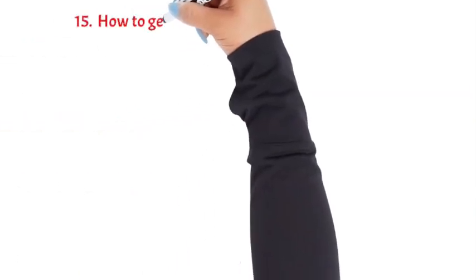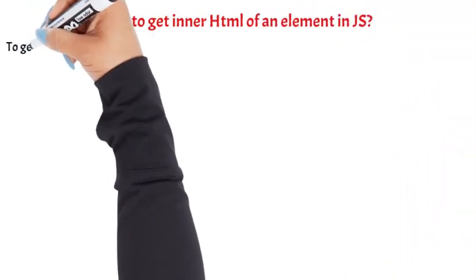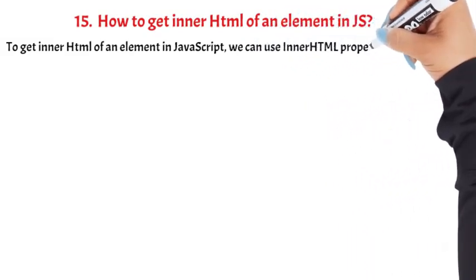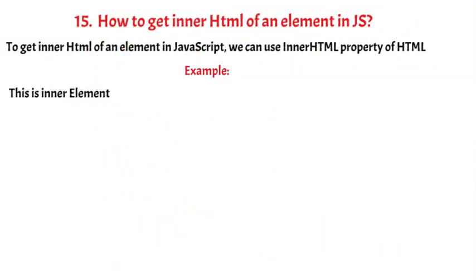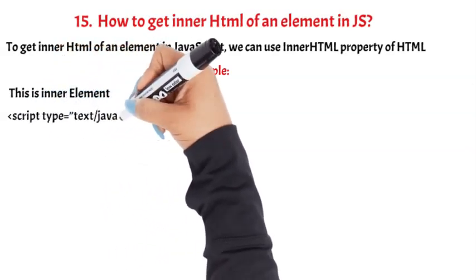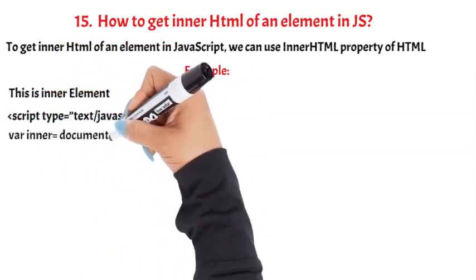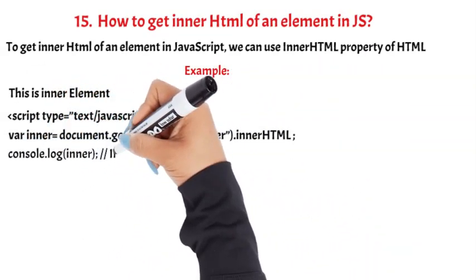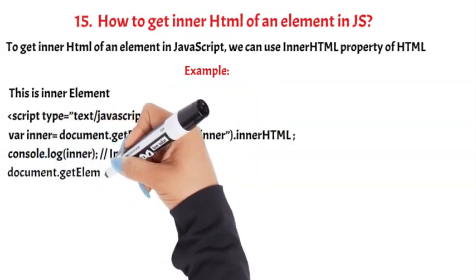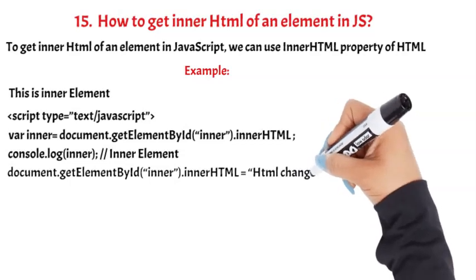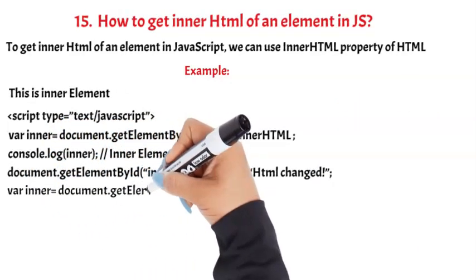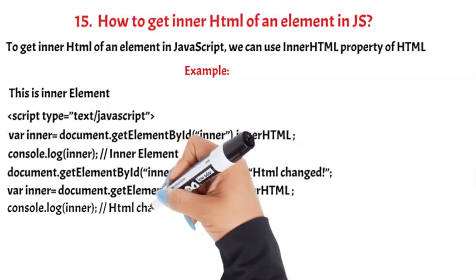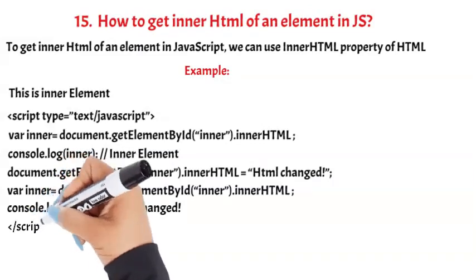Question 15: How to get inner HTML of an element in JS? To get inner HTML of an element in JavaScript, we can use innerHTML property of HTML. Example: var inner = document.getElementById('innerHTML'); console.log(inner); // inner element. document.getElementById('innerHTML').innerHTML = 'HTML changed'; var inner = document.getElementById('innerHTML'); console.log(inner); // HTML changed.